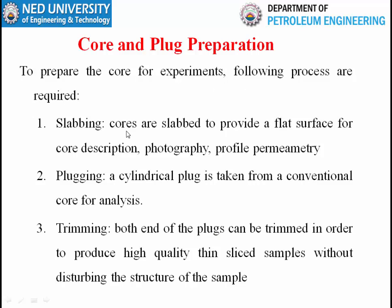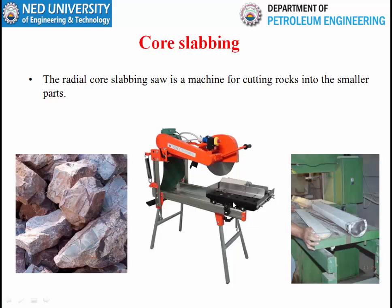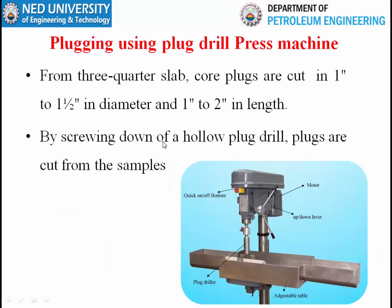Core and plug preparation: to prepare core for experiments, the following processes are done in the lab. First, slabbing — cores are slabbed to provide a flat surface for core description, photography, and profile permeability. Second, plugging — a cylindrical plug is taken from a conventional core for analysis. Third, trimming — both ends of the plugs are trimmed to produce high-quality thin slice samples without disturbing the structure. Plugs are cut to one inch to one-and-a-half inch diameter and one to two inch in length.